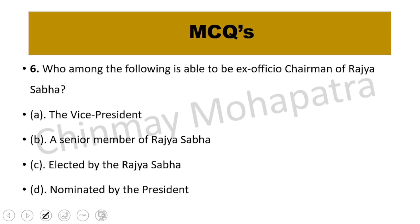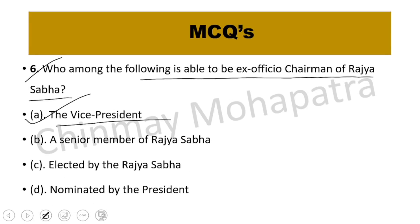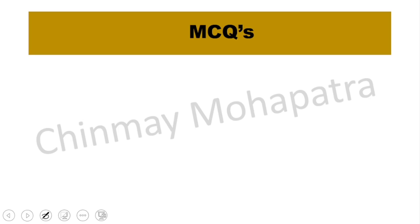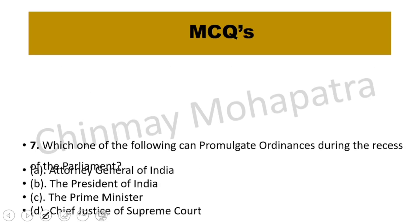Question number 6: Who among the following is able to be the ex-officio Chairman of Rajya Sabha? The right answer is the Vice President. Question number 7.